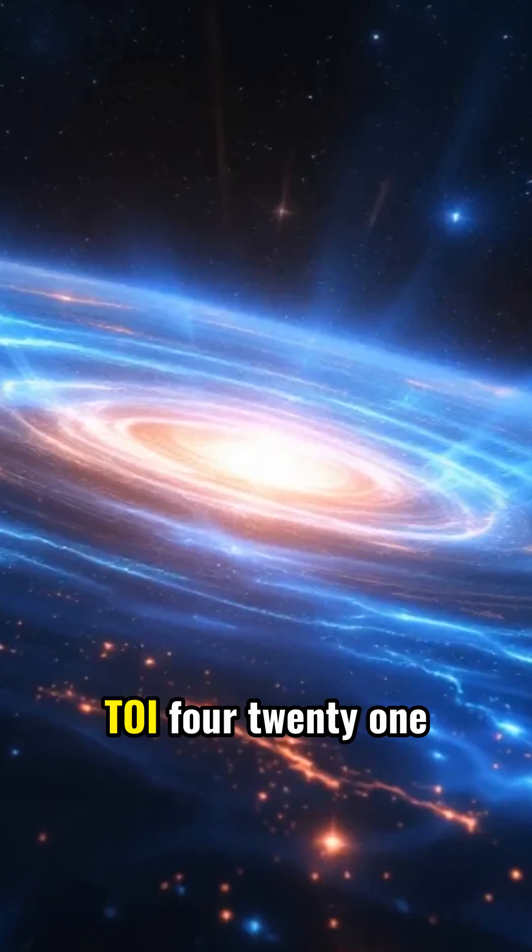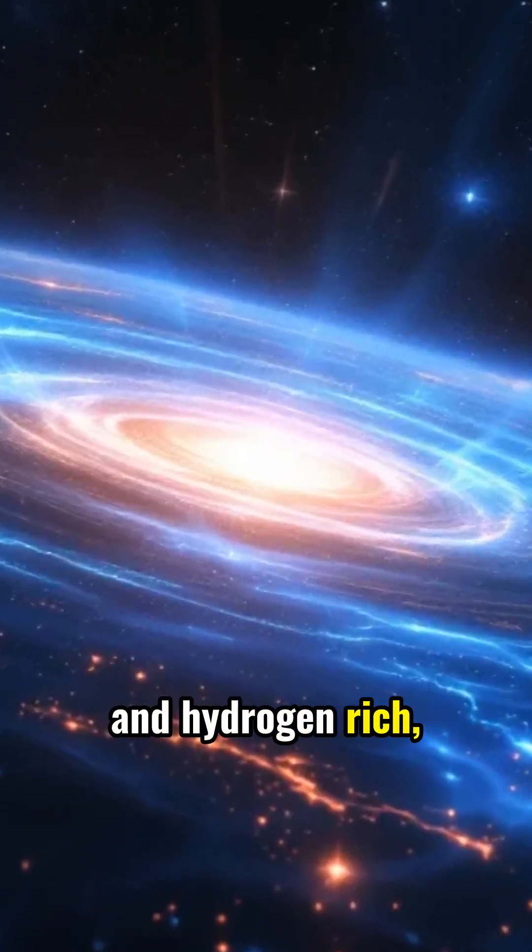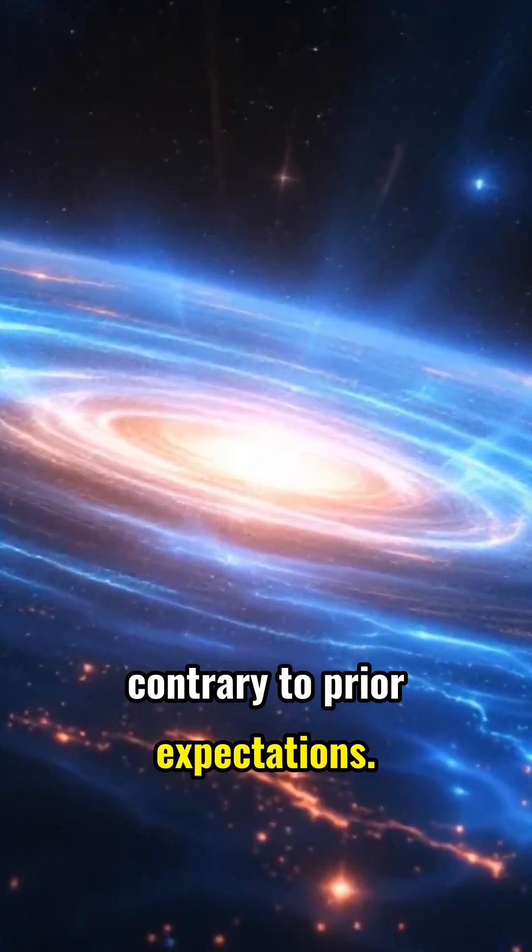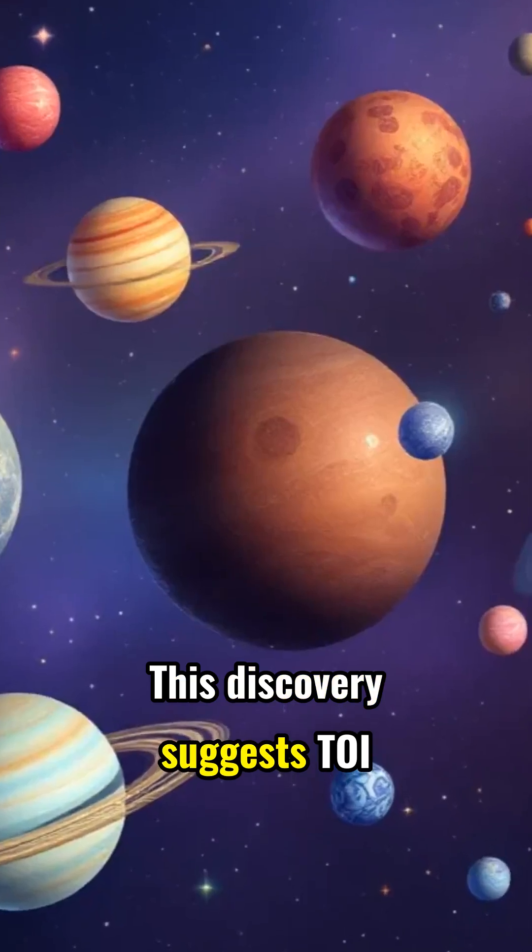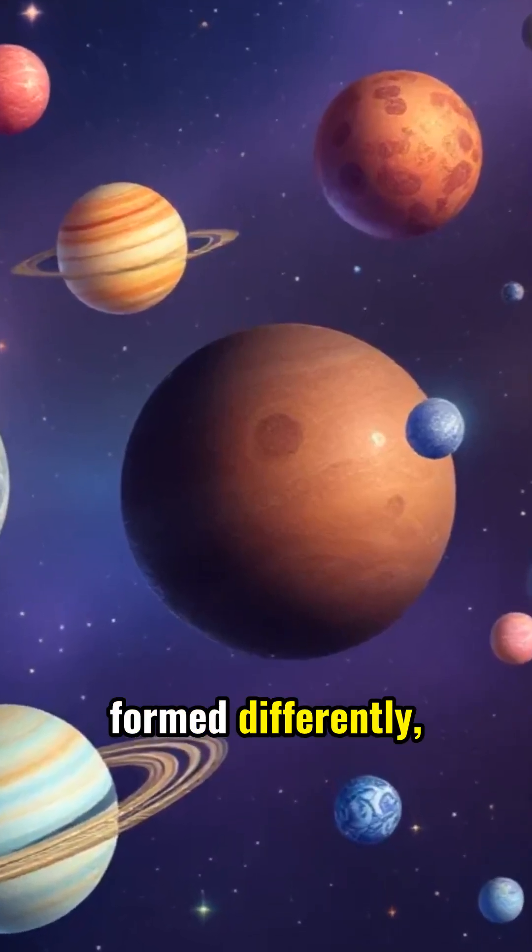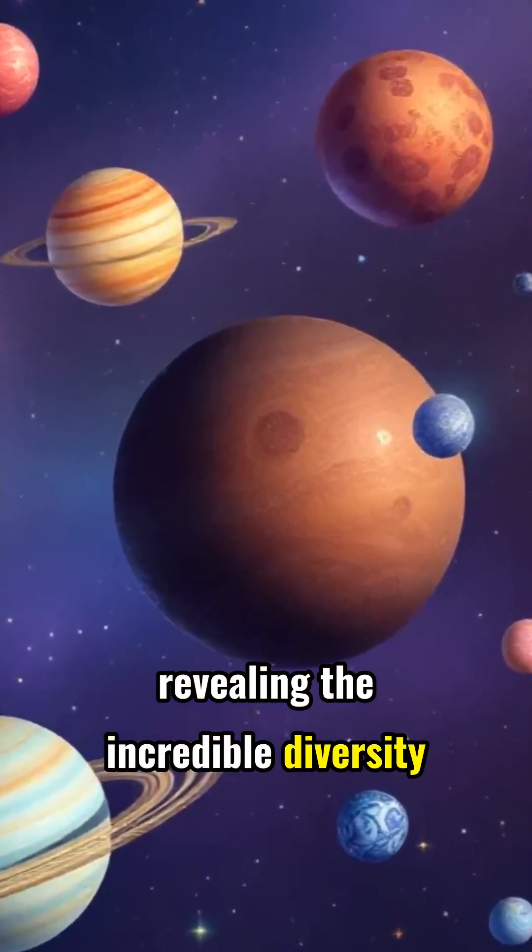Surprisingly, TOI-421b's atmosphere is light and hydrogen-rich, contrary to prior expectations. This discovery suggests TOI-421b formed differently, revealing the incredible diversity of exoplanets.